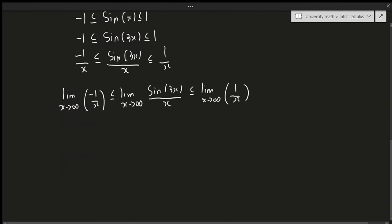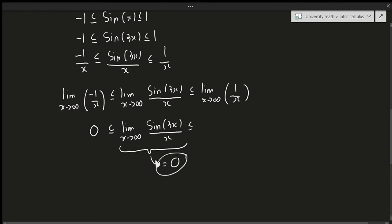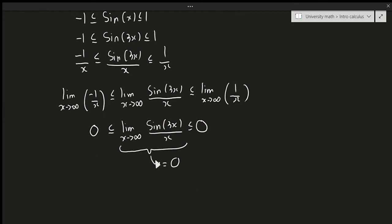The limit of minus one over x as x approaches infinity: minus one over something really big is zero. The limit of one over x as x approaches infinity: one over something really big is also zero. So both outer limits equal zero, and by the squeeze theorem the middle limit — the limit of sine 3x over x — is also zero. You must be careful: the squeeze theorem only works if both outer limits are exactly the same; if they differ, you cannot conclude what the middle limit is.